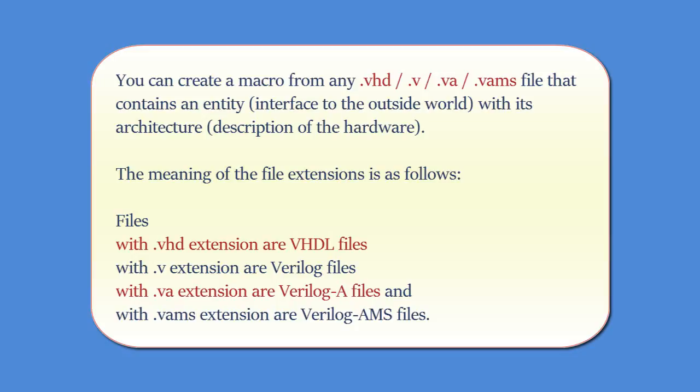The meaning of the file extensions is as follows. Files with the .vhd extension are VHDL files. Files with the .v extension are Verilog files. Files with the .va extension are Verilog A files and the files with the .vams extension are Verilog AMS files.